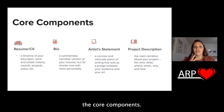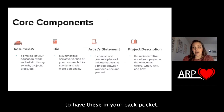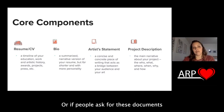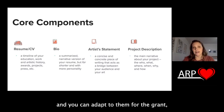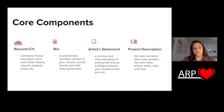Here are what I'm calling the core components — things it's worthwhile to prepare ahead of time, before you're even searching for grants. It's nice to have these in your back pocket. Even if the grants you're applying for use application forms, you can use these to fill in those text boxes, or if grants ask for these documents outright, you'll have them ready to adapt. Those core components are your resume or CV, your bio, your artist statement, and your project description.